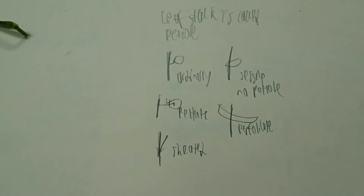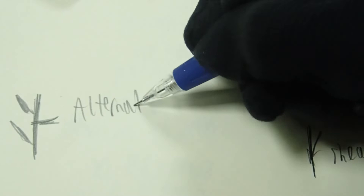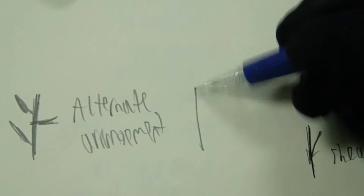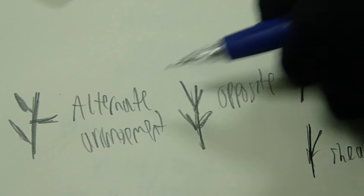Leaves can also be arranged in different fashions. If you have a branch with leaves here, here, and here in an alternating pattern, this would be called the alternate arrangement. But if you have the branch with the leaves in pairs, this is called opposite. These are the two most common, but they're far from the only arrangements that plants might end up having.